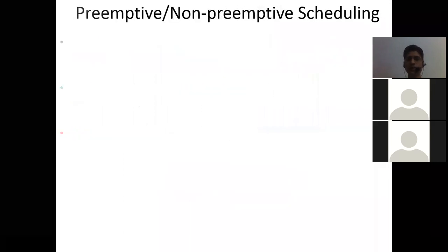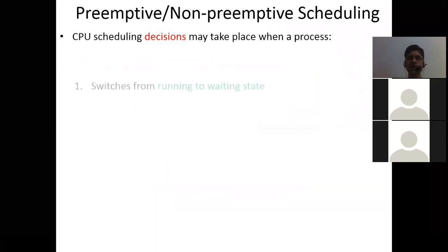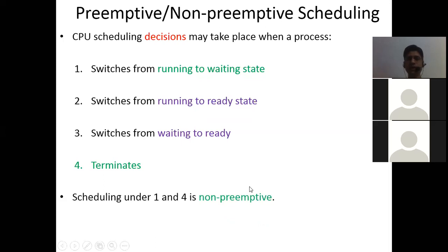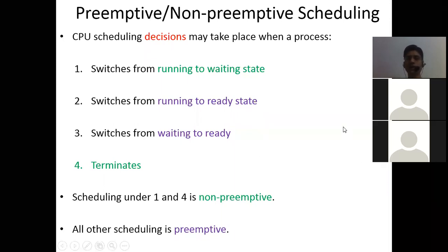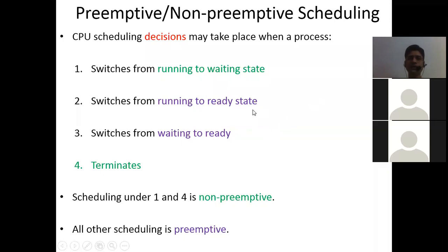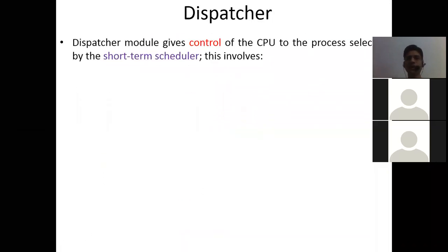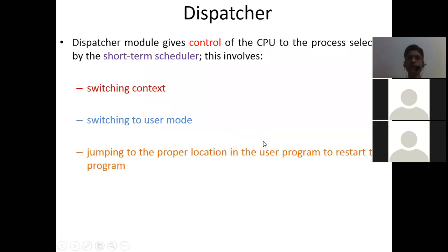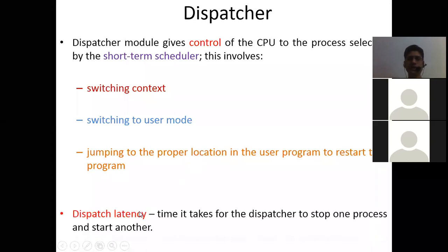Scheduling is of two types: preemptive and non-preemptive. In preemptive scheduling, a process can switch from running to waiting state, running to ready state, waiting to ready state, or terminate. Non-preemptive is like pause and start — some downloads have a resume capability (preemptive) and some don't (non-preemptive). There is also the dispatcher, which gives control of processes selected by the short-term scheduler, involving context switching to user mode and jumping to the proper location in the user program.